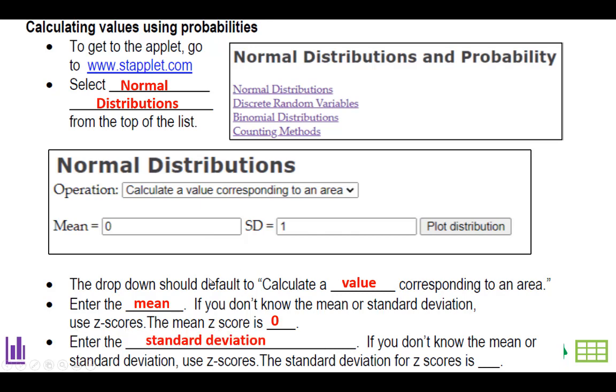Then you enter the standard deviation. And again, if you don't know the standard deviation, go ahead and use the z-scores. The standard deviation for z-scores is one.